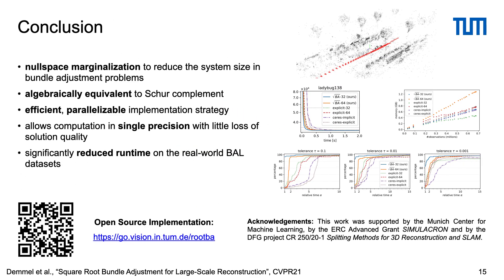In summary, we propose null space marginalization to reduce the system size in bundle adjustment problems and prove that it is algebraically equivalent to the Schur complement. We present an efficient implementation strategy that is well parallelizable and allows computation in single precision with little loss of solution quality. Our extensive evaluation on the real-world BAL datasets demonstrates significantly reduced runtime compared to Ceres and our own Schur complement-based implementation. Thank you for your attention, and please visit our project webpage for source code and further details.